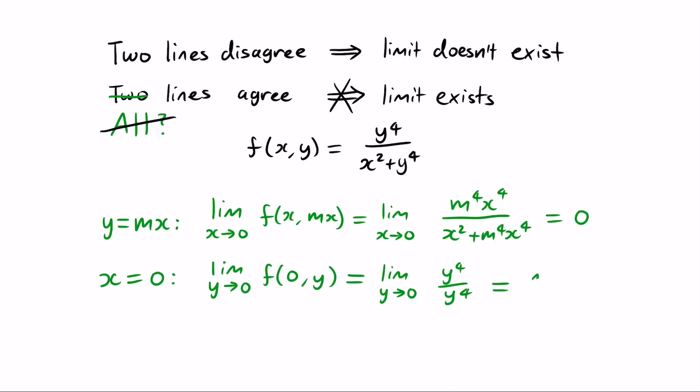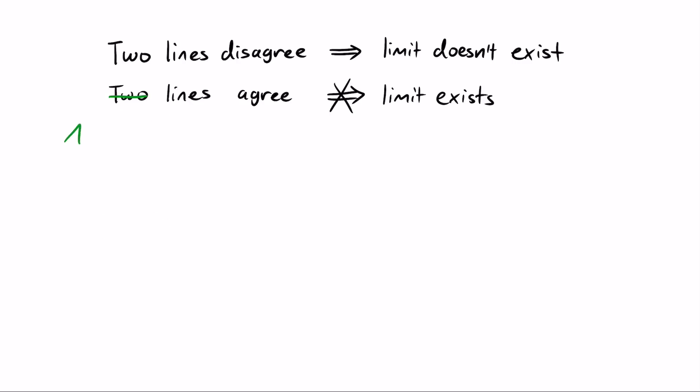Eh, but I still find this unsatisfying. I want an example where the limit fails to exist even when every straight line path, including x equals 0, gives the same limit. Is this even possible? Well, there's one relatively simple answer.